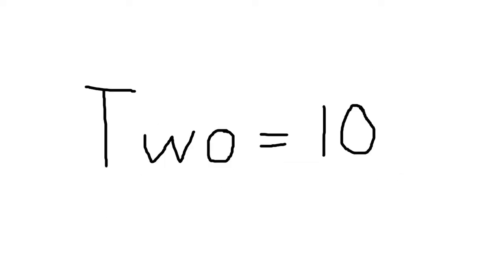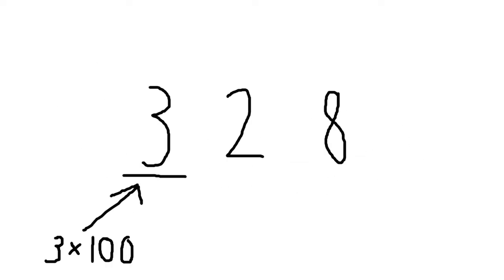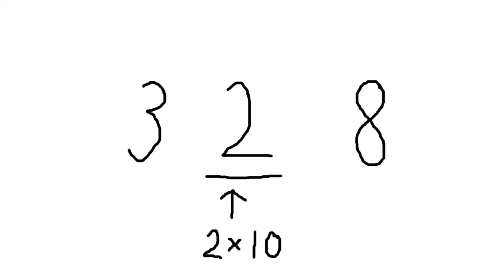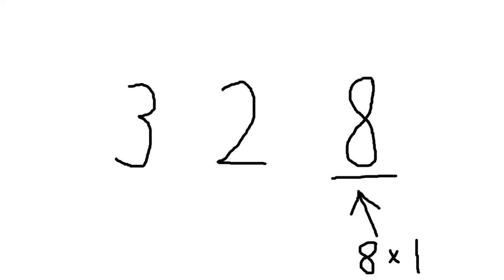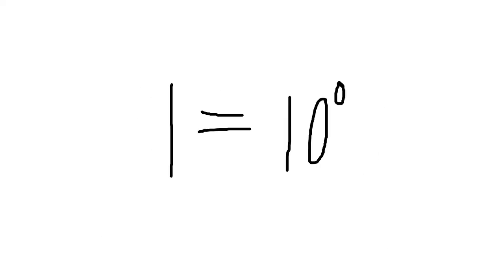2, 2, 33, 33, 328: three hundreds, two tens, eight ones. 1.